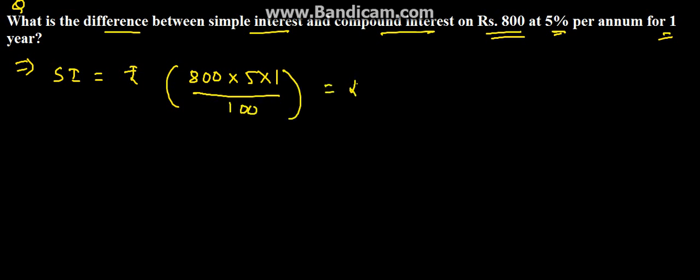This will be equal to Rs. 40. How have we done this? We know the formula: SI equals PRN upon 100. This is the formula and we have substituted the values.